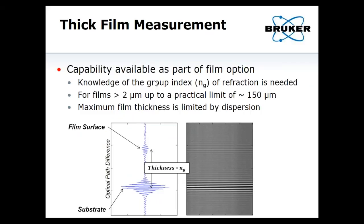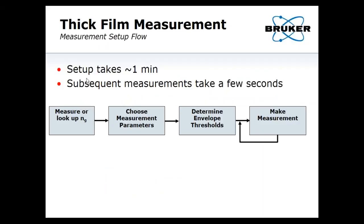Here's how you actually do the thick film measurement. You'd see two sets of fringes on screen, although you generally want to null these out before you actually do the measurement. What do you need to know? You need to know the group refractive index, and that's about it. You have to set some environmental thresholds. Setup takes about a minute. Subsequent measurements only take a few seconds — however long the VSI measurement that you programmed actually will take to run, maybe one to three seconds.